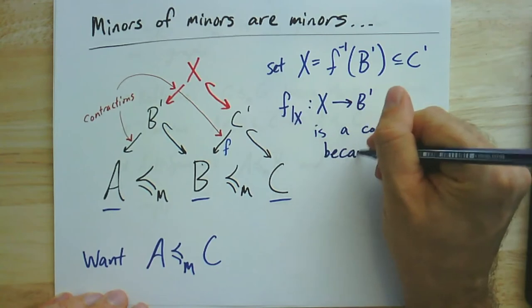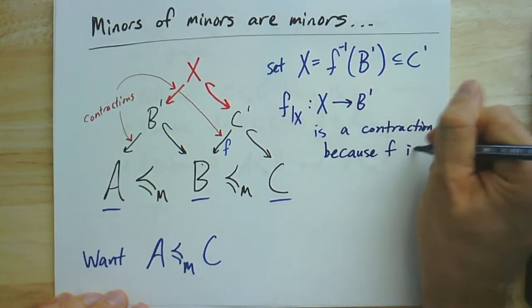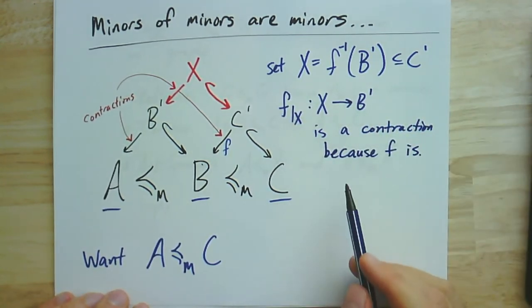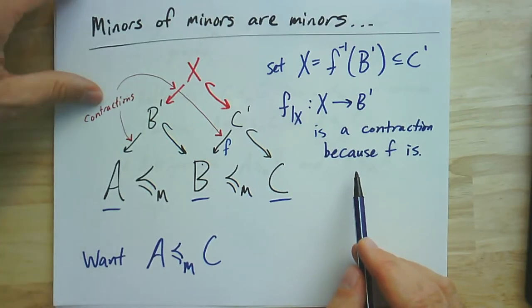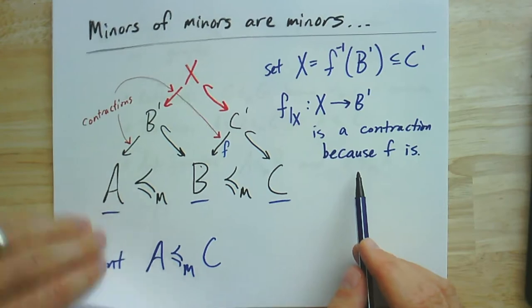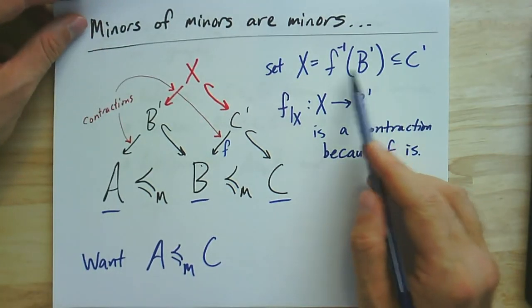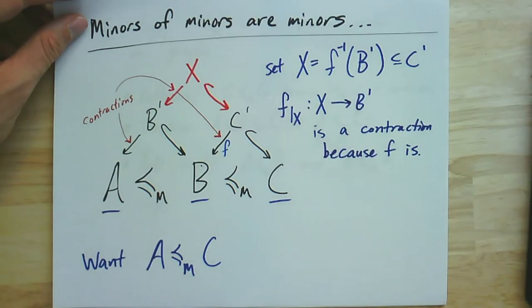And the reason it's a contraction is because F is. And so you can just check that the preimages of connected subgraphs are connected. Also matters that X was defined to be exactly this preimage. That's what guarantees that it's surjective.